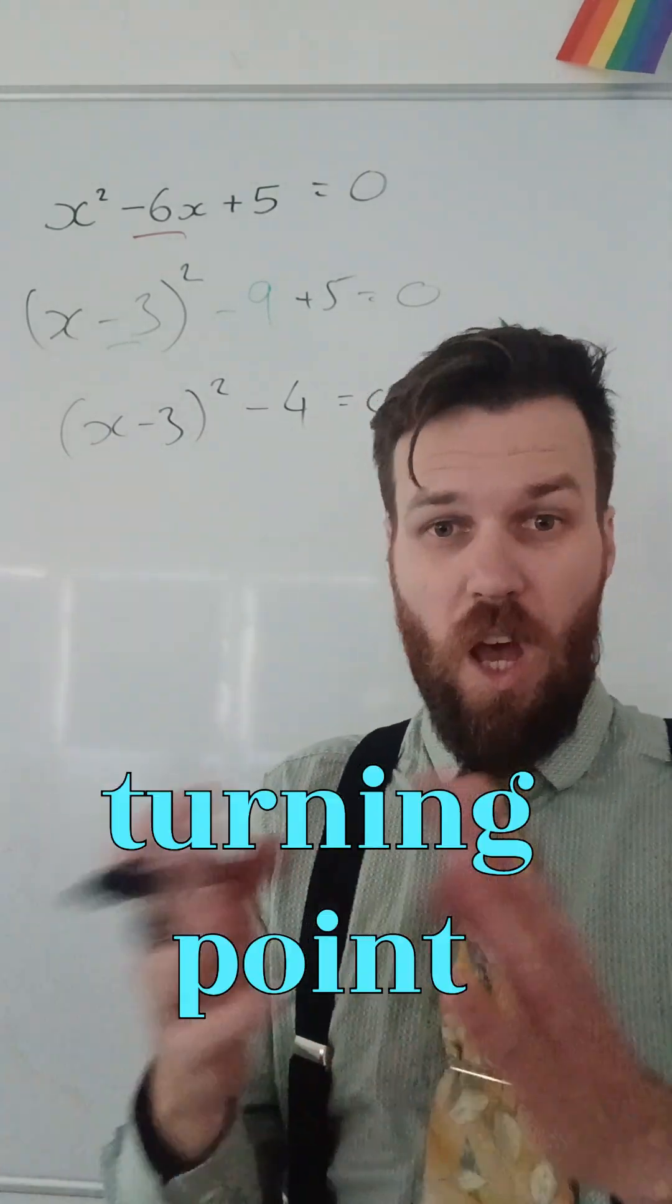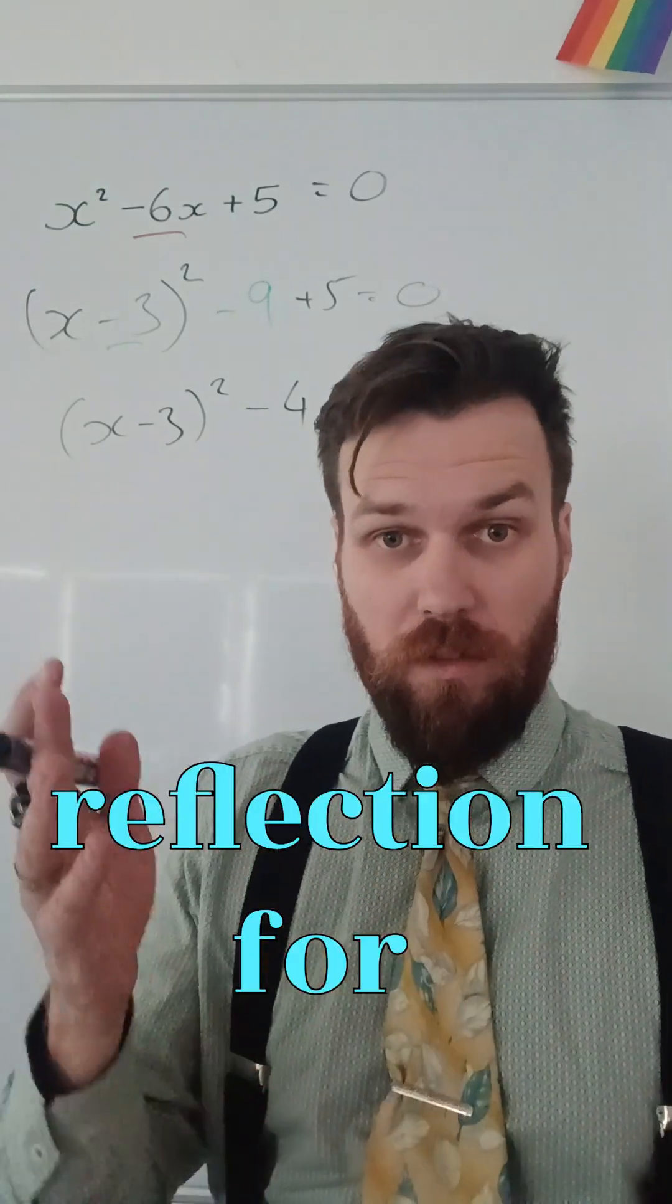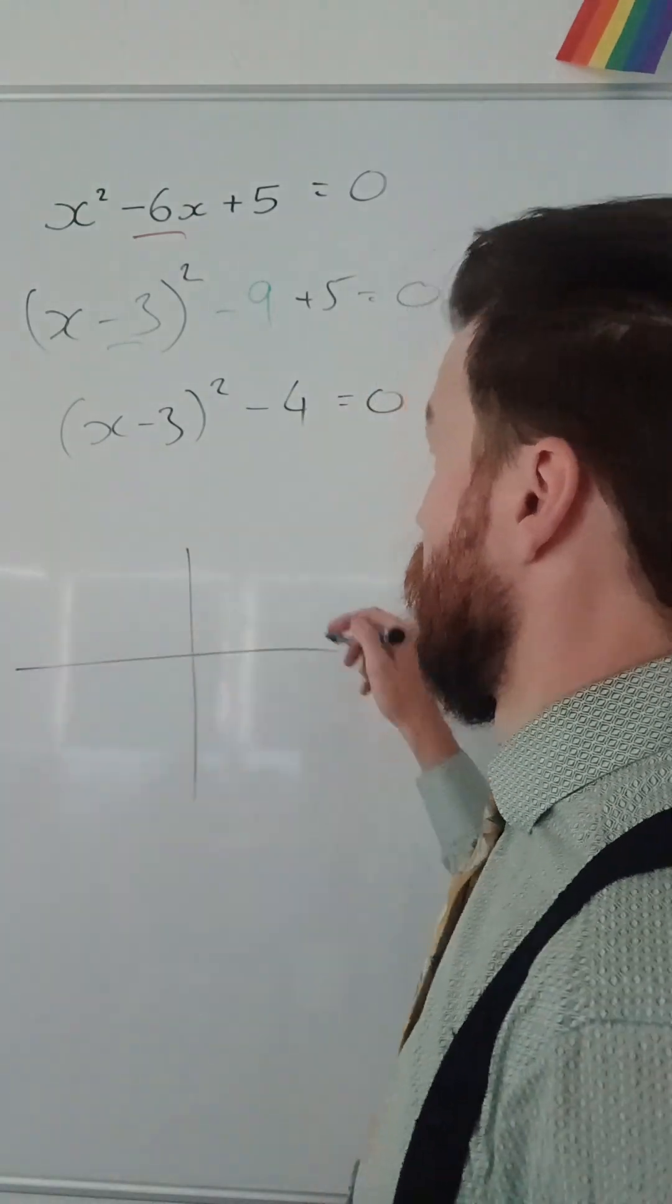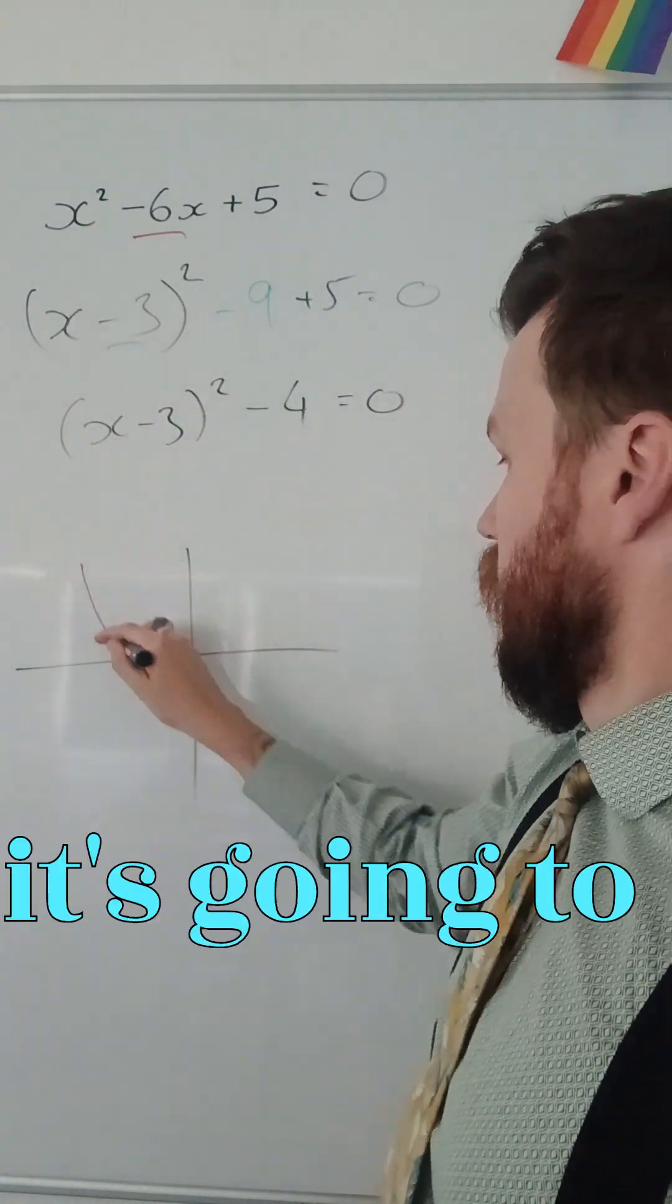But if it asks for turning point, or line of axis, sorry, line of reflection for a quadratic, this is a quadratic, it will look something like this, because it's got a positive coefficient of x here, so it's going to look like that.